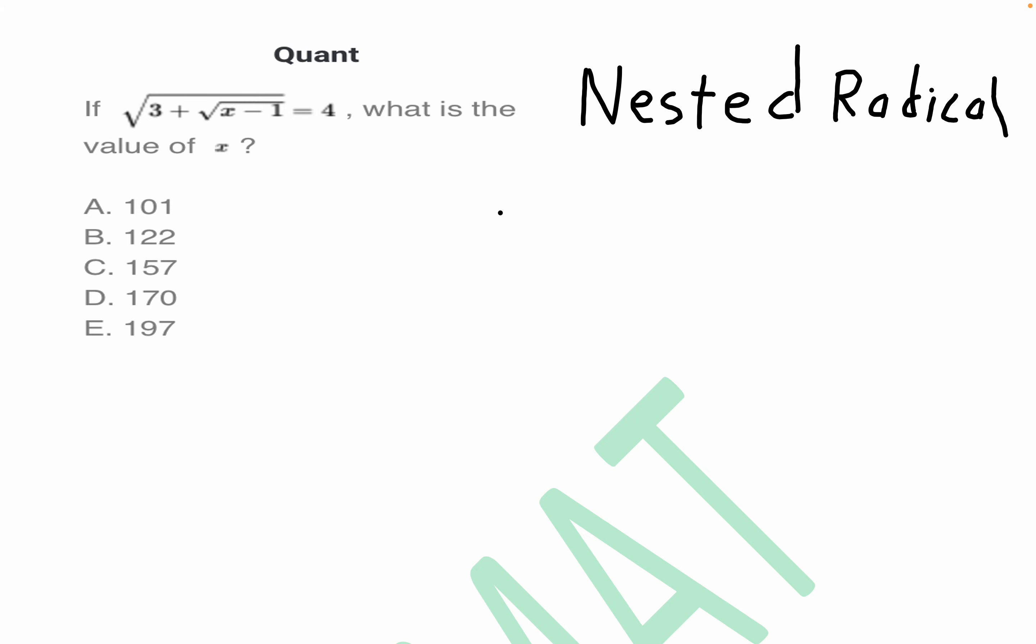This is a GMAT quantitative question about a nested radical - a radical or square root contained within a square root. Probably the best approach here, outside of just guessing, is to note that...